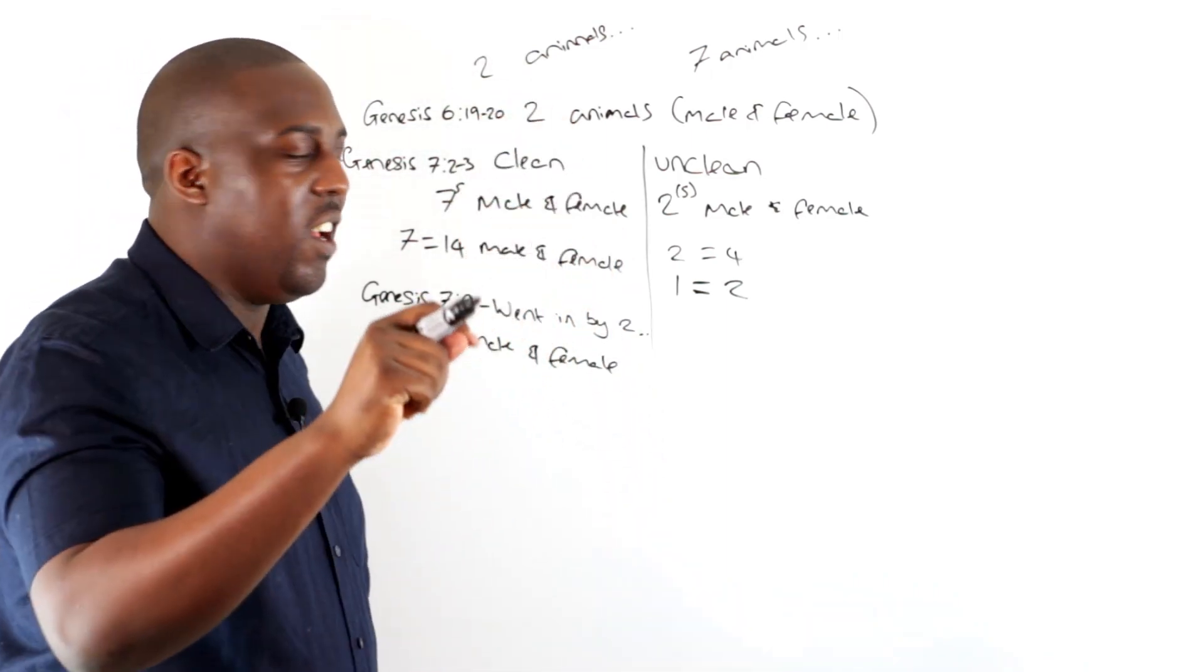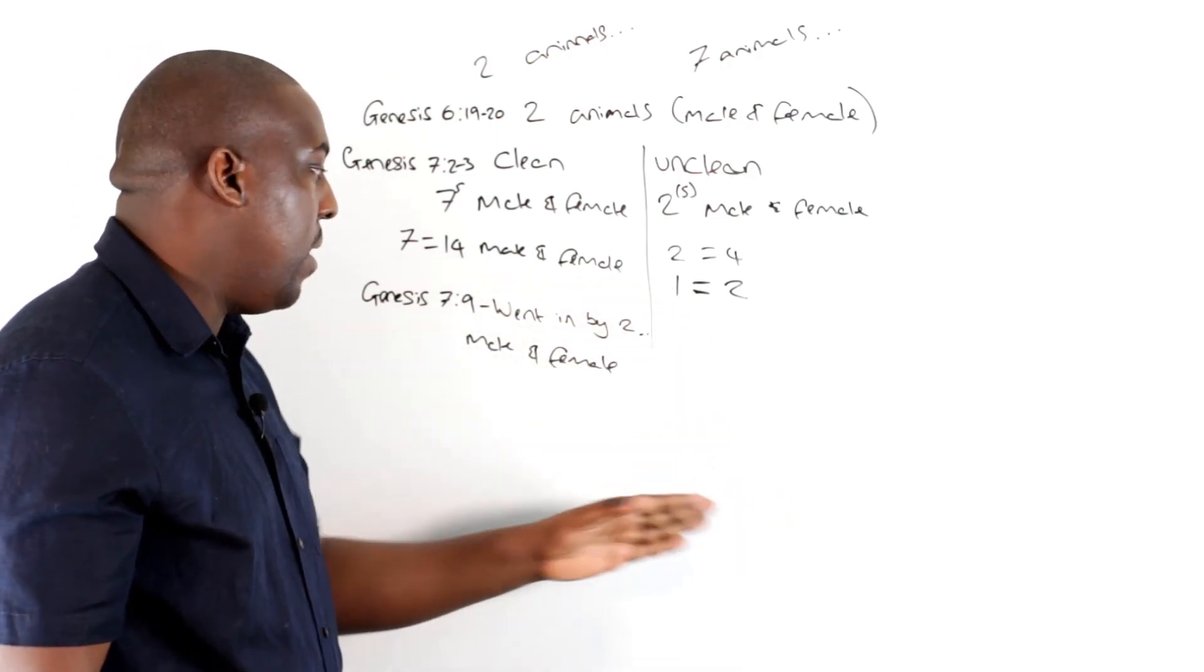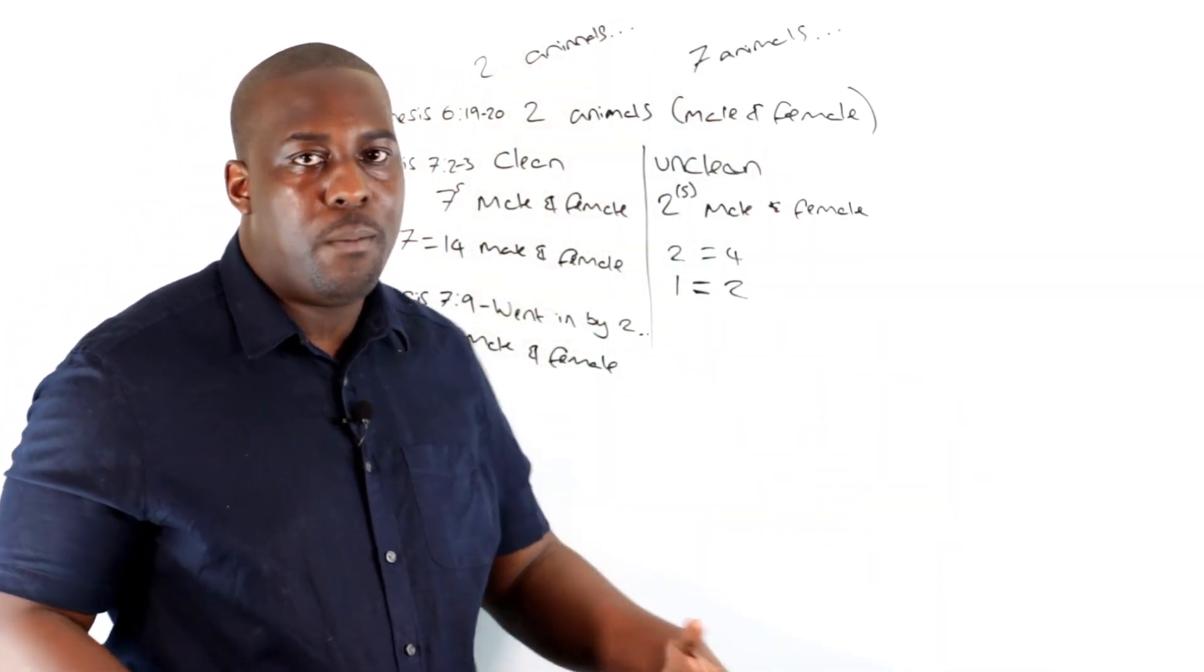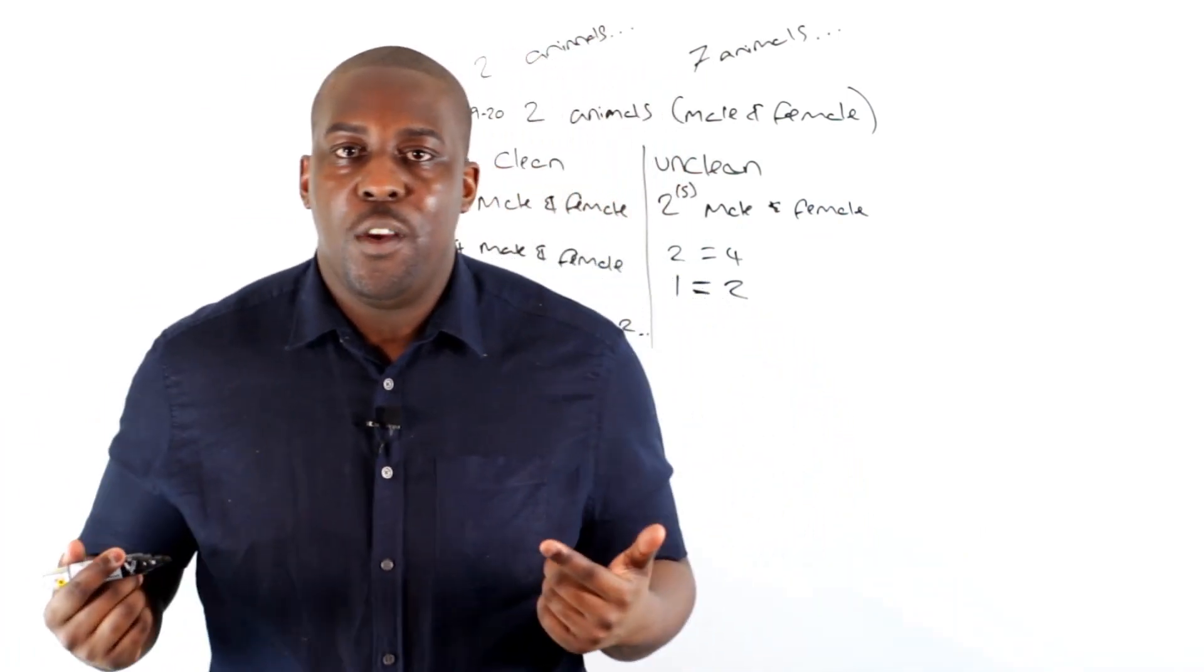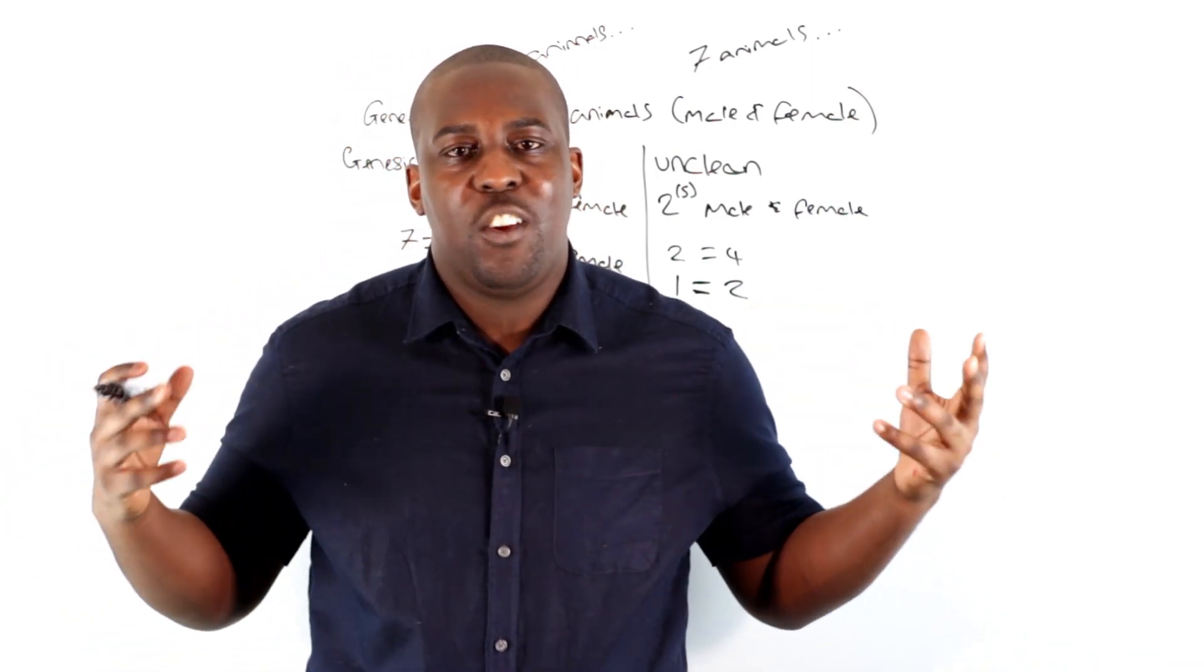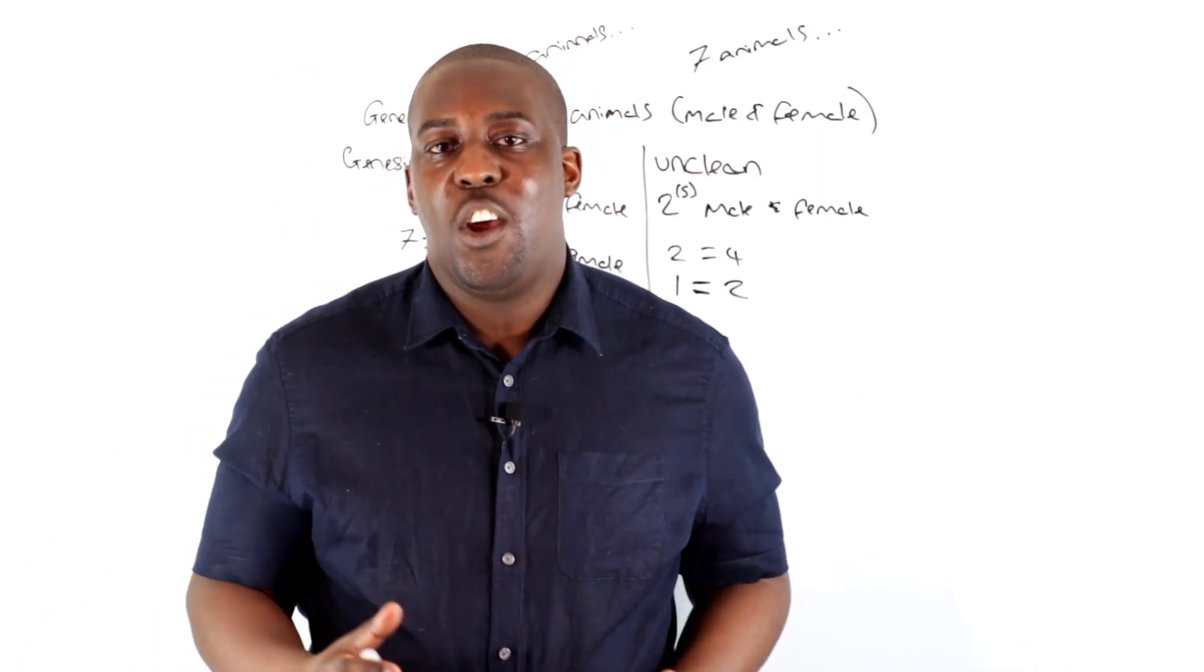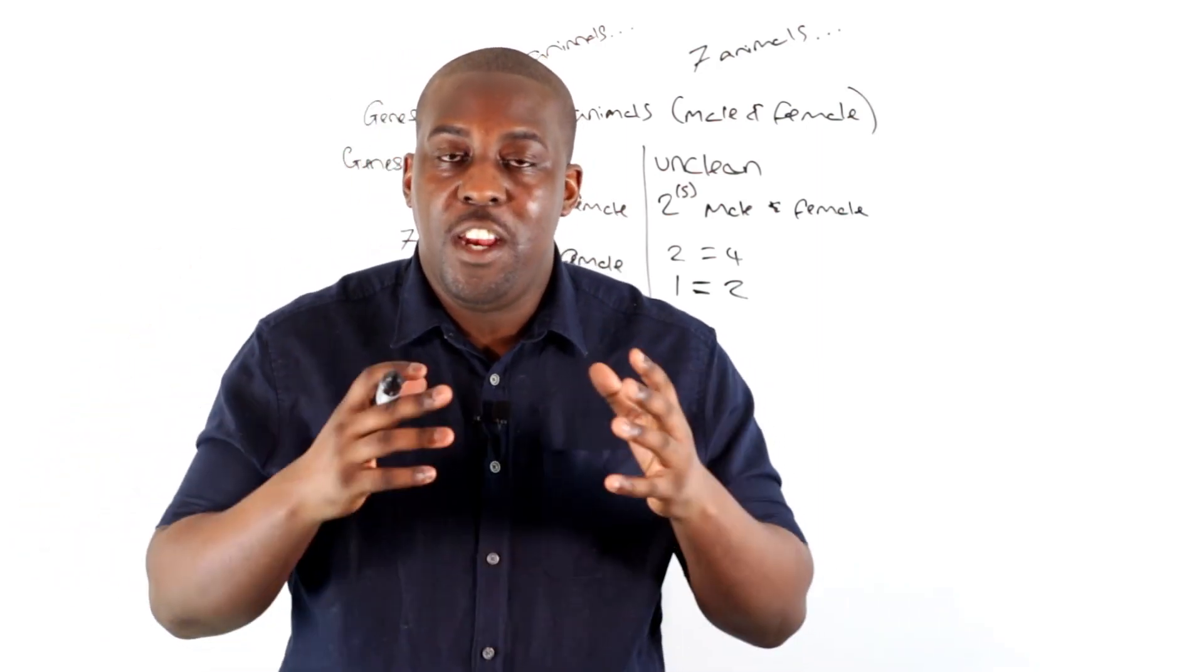So it wasn't two animals that went into the ark. It was seven pairs of the clean animals and either two or one pair of the unclean animal, and they actually went into the ark specifically male and female by two, that's what it means. So this pretty much clarifies and clears up the answer to your question: how many animals went into the ark? And I mentioned earlier on in the video, at the end of the video I'm going to talk about how many animals went in specifically, because it raises a question once you've done all these calculations, how could Noah have got millions of animals into the ark? First and foremost, I'm going to just say this: Noah didn't have to get millions of animals into the ark.